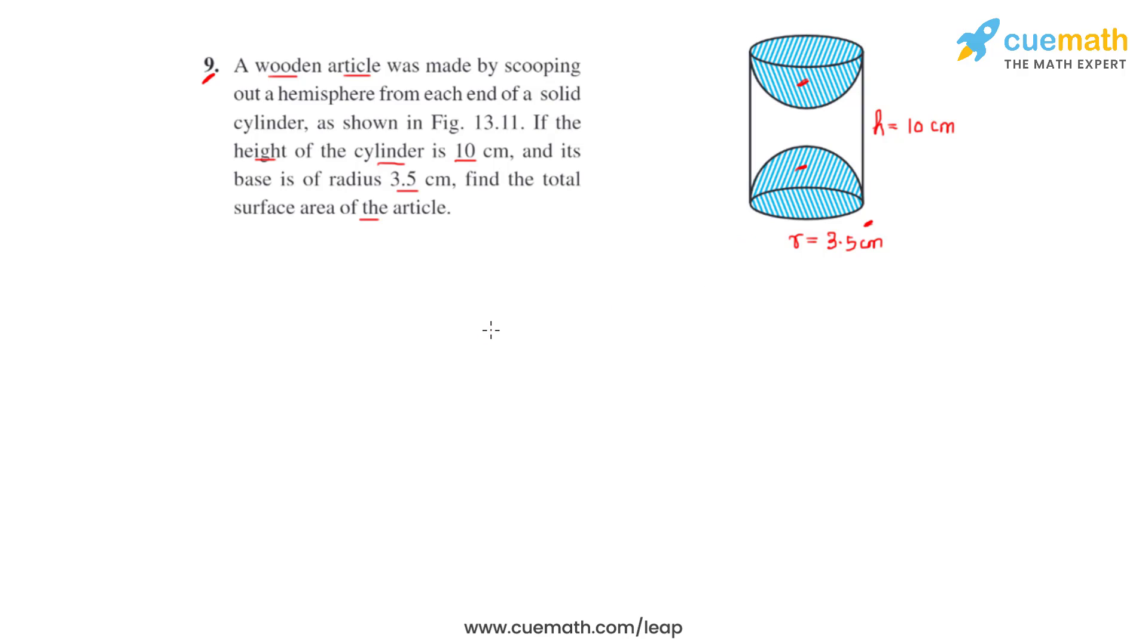The total surface area of the article includes the curved surface area of both the hemispheres and the cylinder. Now, why we are taking into consideration the curved surface area of the two scooped out hemispheres is because by scooping out we are creating more surface area.